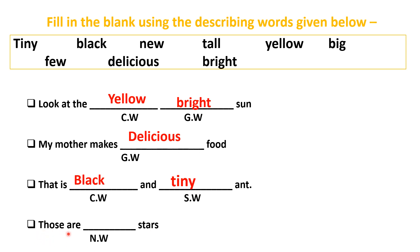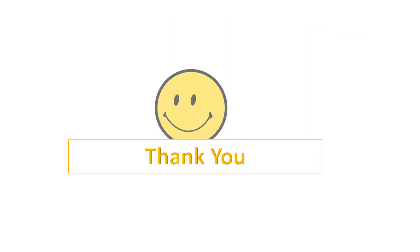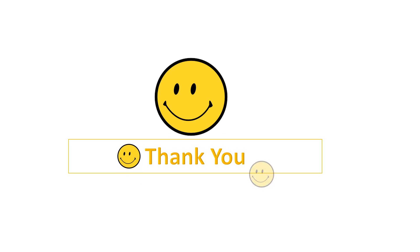Fourth sentence: 'Those are dash stars.' We have to use a number word, so it will be 'few': 'Those are few stars.' So this was all. Thank you, everyone. If you like my video, please do subscribe, like and share. Thank you, everyone.